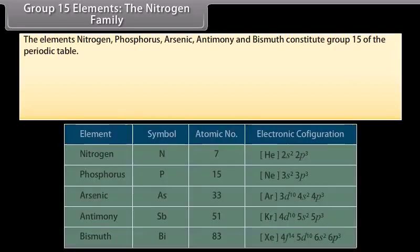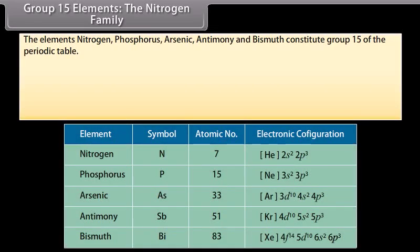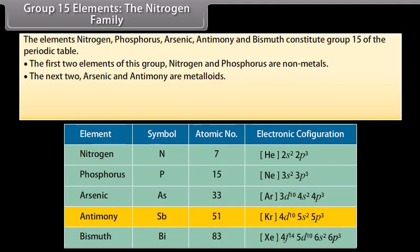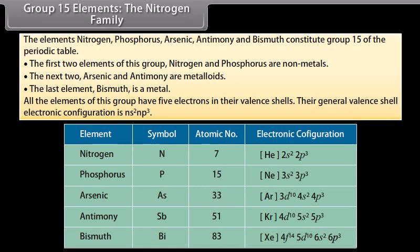The elements nitrogen, phosphorus, arsenic, antimony and bismuth constitute group 15 of the periodic table. The first two elements, nitrogen and phosphorus, are non-metals. The next two, arsenic and antimony, are metalloids. The last element, bismuth, is a metal. All the elements of this group have 5 electrons in their valence shell. Their general valence shell electronic configuration is NS2NP3.